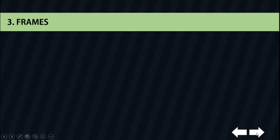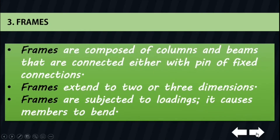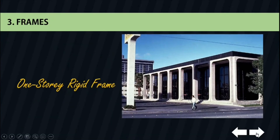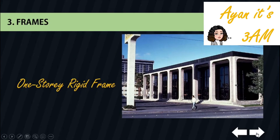Next on our list is frames. Frames are composed of columns and beams that are connected either with pin or fixed connections. Frames are often used in buildings. Like trusses, frames extend to two or three dimensions. When frames are subjected to loadings, it causes members to bend. A sample of our frames is this one-story rigid frame, where both the horizontal and vertical stability depend on the concrete frame on all four sides.